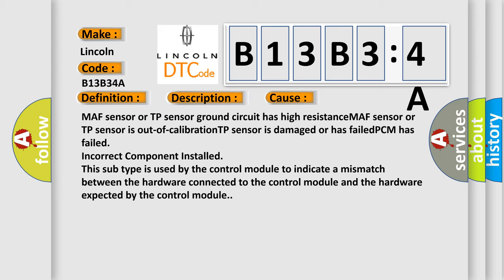PCM has failed, incorrect component installed. This subtype is used by the control module to indicate a mismatch between the hardware connected to the control module and the hardware expected by the control module.